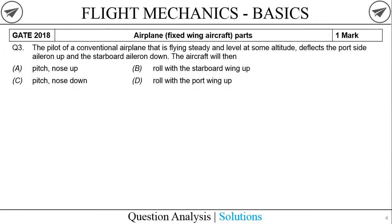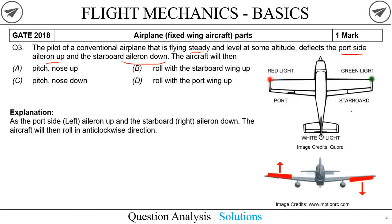The third question is from GATE 2018: the pilot of a conventional airplane flying steady and level at some altitude deflects the port side aileron up and the starboard aileron down - the aircraft will then do what? We need to understand two things: the meaning of port and starboard, and what an aileron is. An aileron is the control surface used to roll the aircraft.